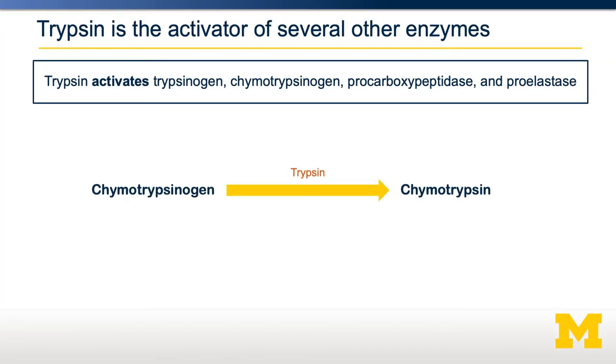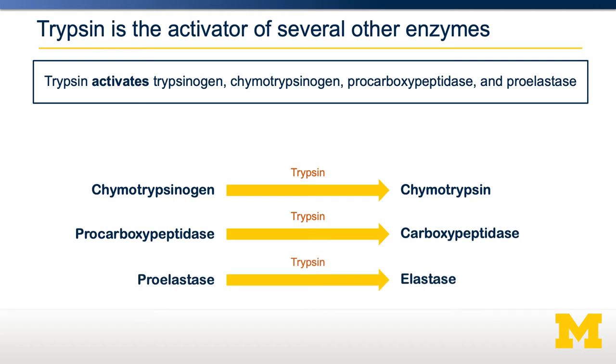Trypsin is also really important because it goes on and activates several other enzymes in the small intestine, including chymotrypsin, carboxypeptidase, and elastase. Trypsin can also feed back and activate itself in a positive feedback loop. So as you get activation of trypsin, you can keep activating more trypsin, in addition to all these other enzymes.